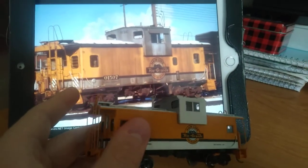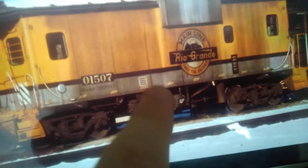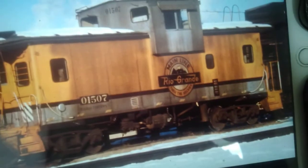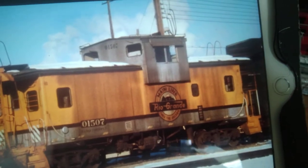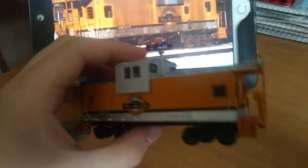And I believe this image is mirrored, because some of these things, like this vent and this, are present supposedly on one side of the caboose, but on the model they're on the other side.